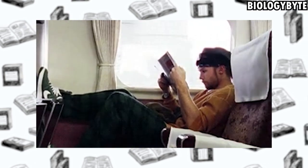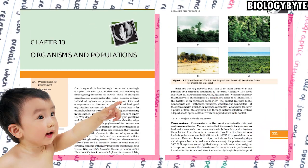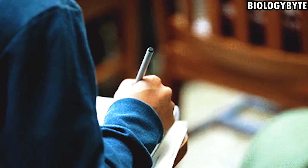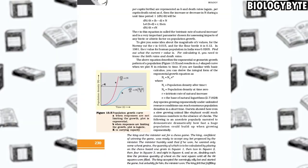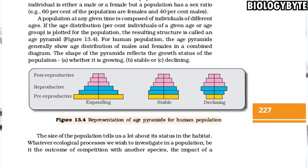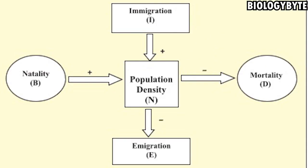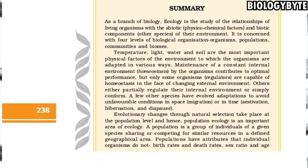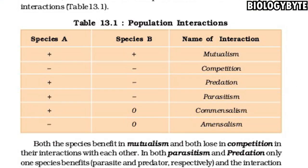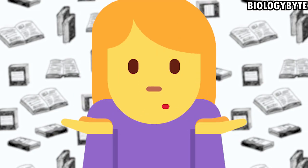The first do-or-die chapter is our Ecology unit — Organism and Population. There are many questions from this chapter: long questions, diagram-based questions, and examples. These chapters are not difficult, so you can easily score in them. I have also made a video with short-trick ecology, so watch it and remember it.